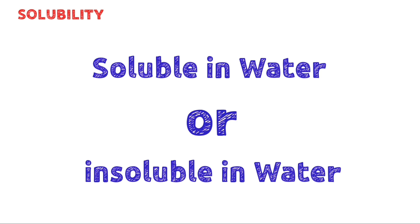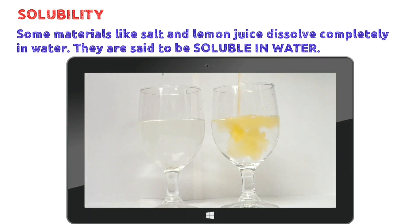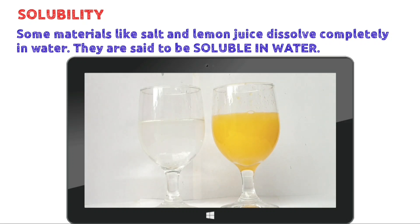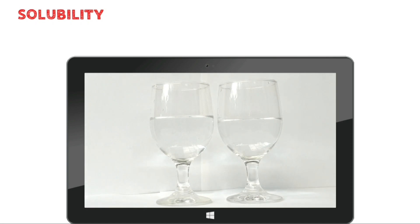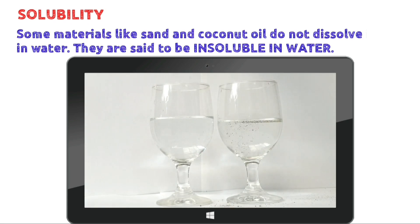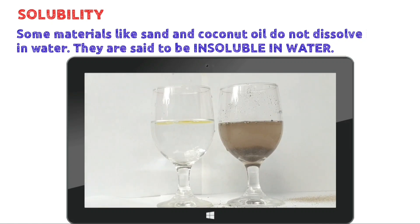The next property is solubility. Let's try to dissolve a few materials in water. Some materials like salt and lemon juice dissolve completely in water — they are said to be soluble in water. On the other hand, some materials like sand and coconut oil do not dissolve in water even with hard stirring — such materials are said to be insoluble in water.